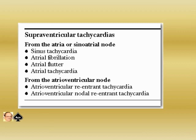Supraventricular tachycardia can arise from the atria or sinoatrial node — including sinus tachycardia, atrial fibrillation, atrial flutter, and atrial tachycardia. Then supraventricular tachycardia from the AV node: atrioventricular reentrant tachycardia and atrioventricular nodal reentrant tachycardia. So those are the main supraventricular tachycardias. We will be discussing how to diagnose these. In one of the previous videos I have shown you the various algorithms — you can go back to those videos and refresh your memory.